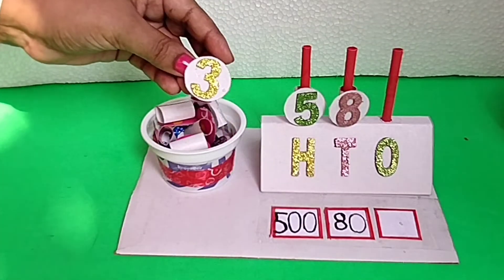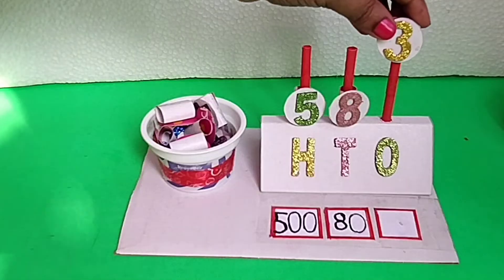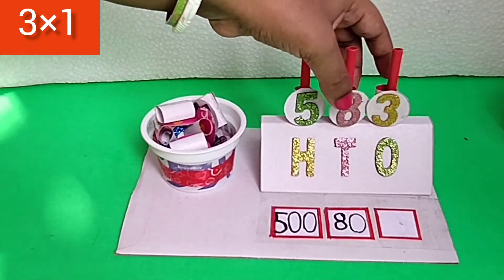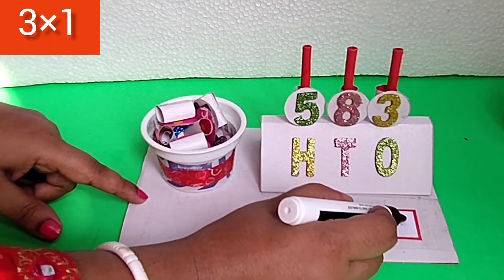The face value of 3 is 3. Now, we put the number 3 in one's column. It means the place value of 3 is 3.